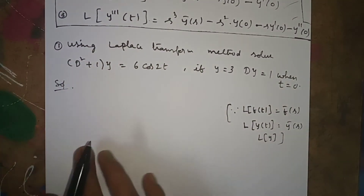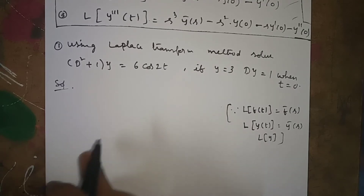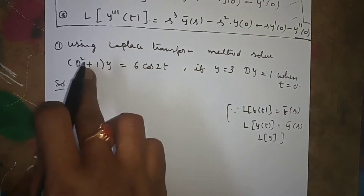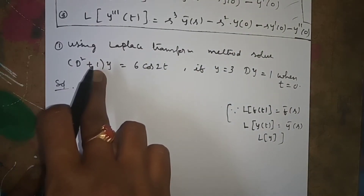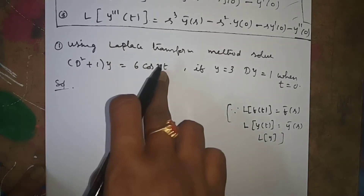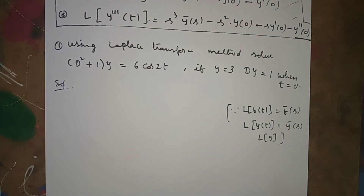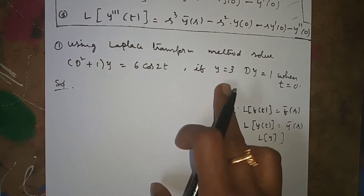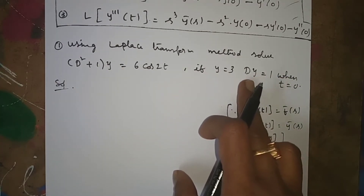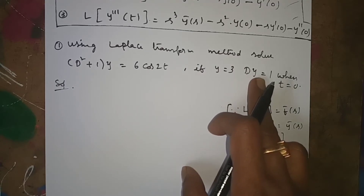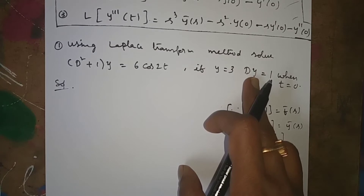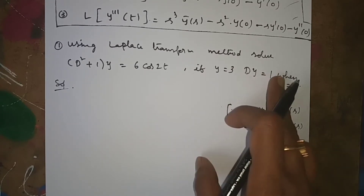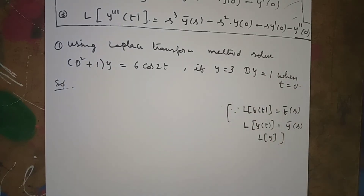Using the Laplace transform method, solve (D² + 1)y = 6cos2t, where the initial conditions are given: y = 3 and Dy = y' = 1 when t = 0.